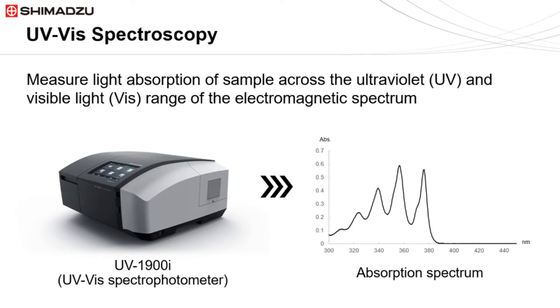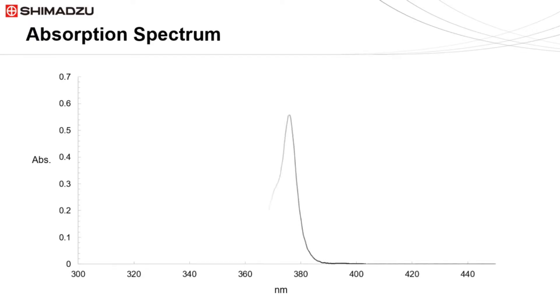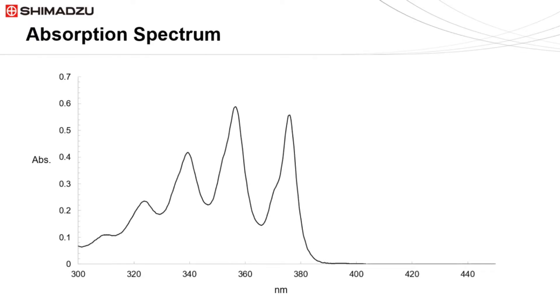This displays how much light is able to pass through the sample and into the detector of the spectrophotometer. The absorption spectrum is normally presented in the form of a graph, where the y-axis represents absorbance and the x-axis represents wavelength. Peaks in the spectrum, known as absorption peaks, indicate the wavelength of light that is absorbed by the sample.